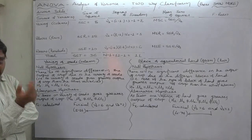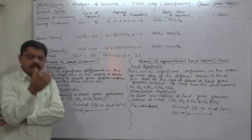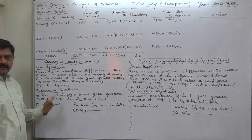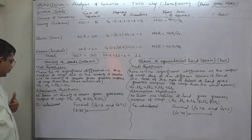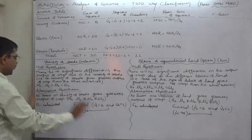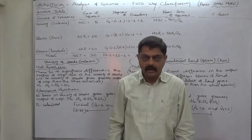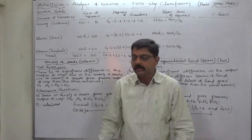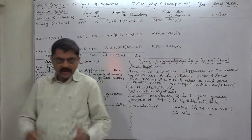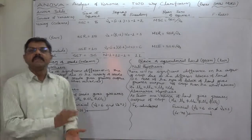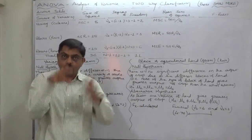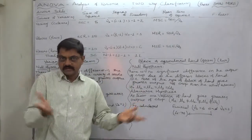But if at the end of our hypothesis testing the null hypothesis is rejected, we should have an alternative claim to be accepted as a conclusion — that is the alternative hypothesis. In this case, the alternative hypothesis is: at least one variety of seeds gives greater output of crop. Yes, at least one out of three, any one, two, or all three gives greater output. That means at least one gives greater output than the other two.